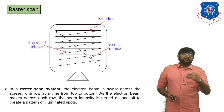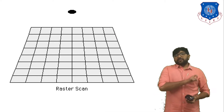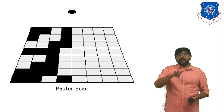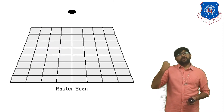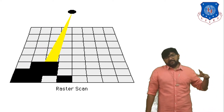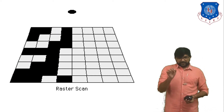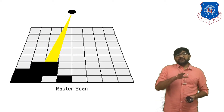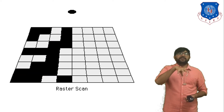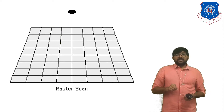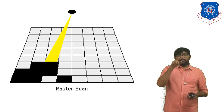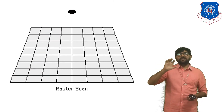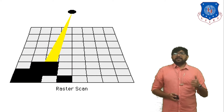For the working of raster scan display devices we can understand based on this animation. In the graphic display devices, which are full of pixels, we decide which pixel value is 0 and which pixel value is 1. In this animation, those pixels highlighted in black spots have pixel value 1, and those pixels in the white position have pixel value 0. So in raster scan display devices the electron beam moves from top to bottom and left to right, scanning the whole display, and those pixels with intensity value 1 are visualized. This is raster scan display.